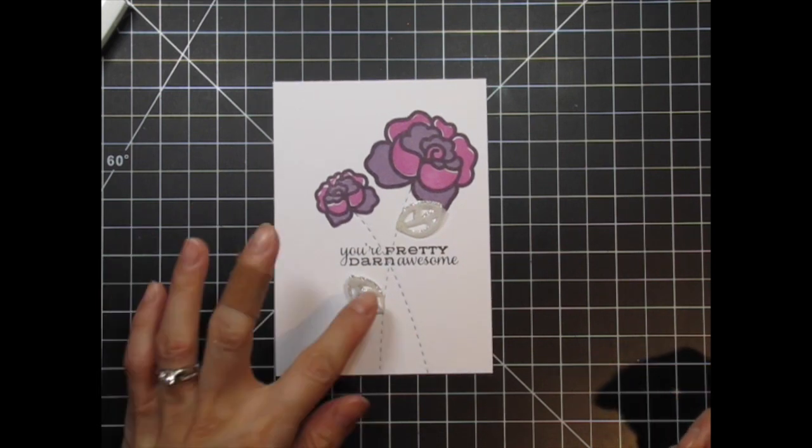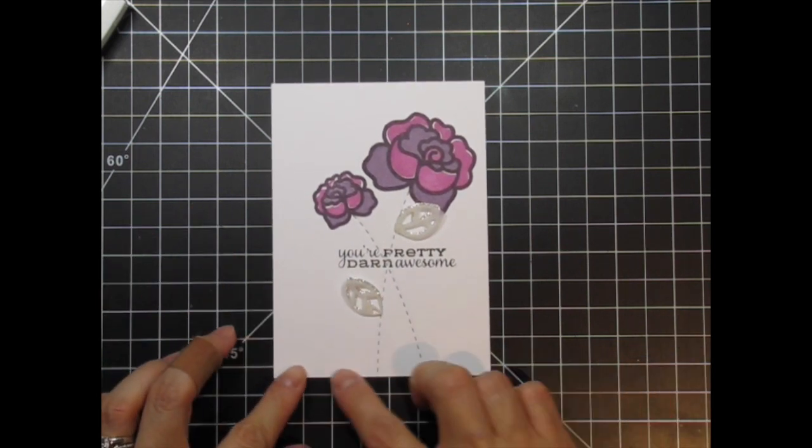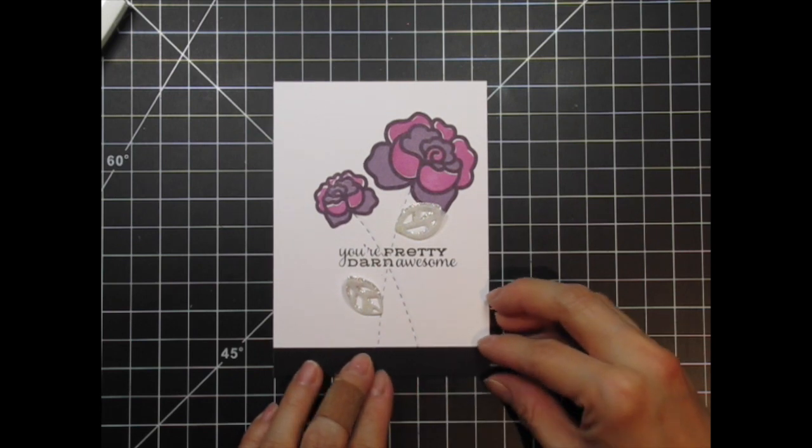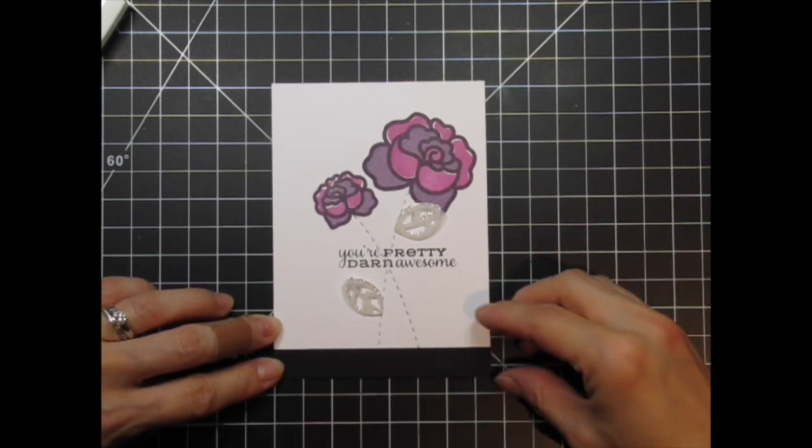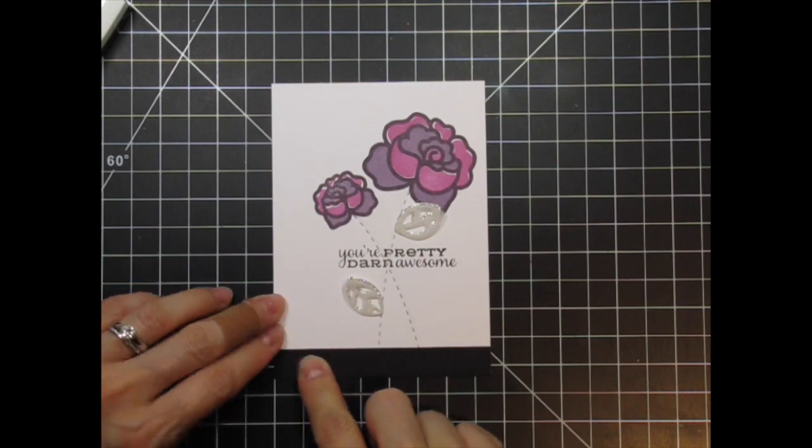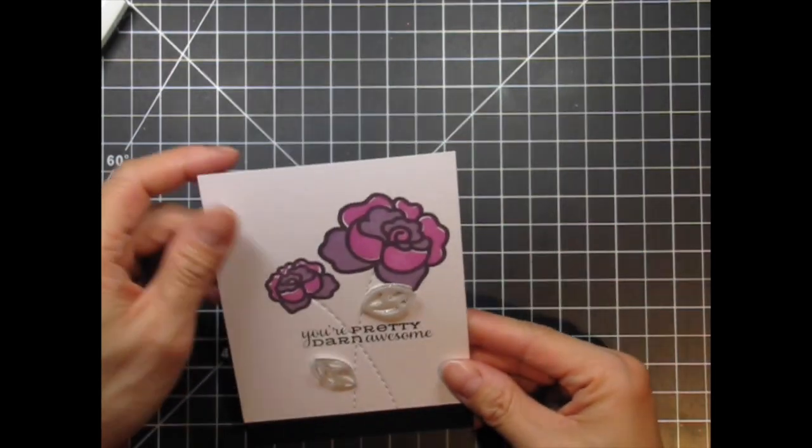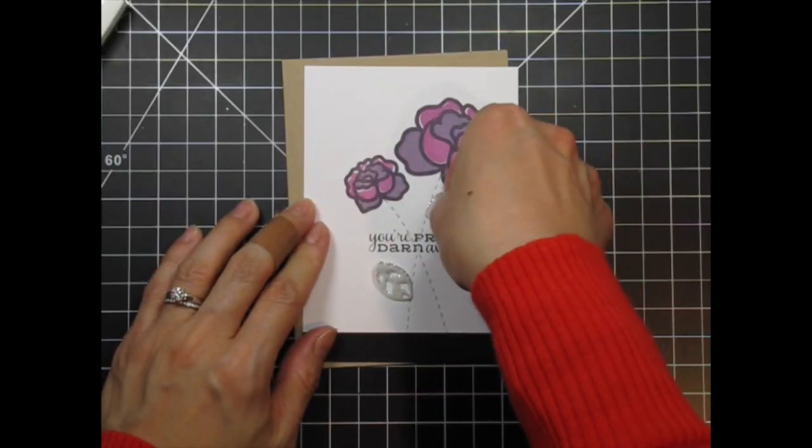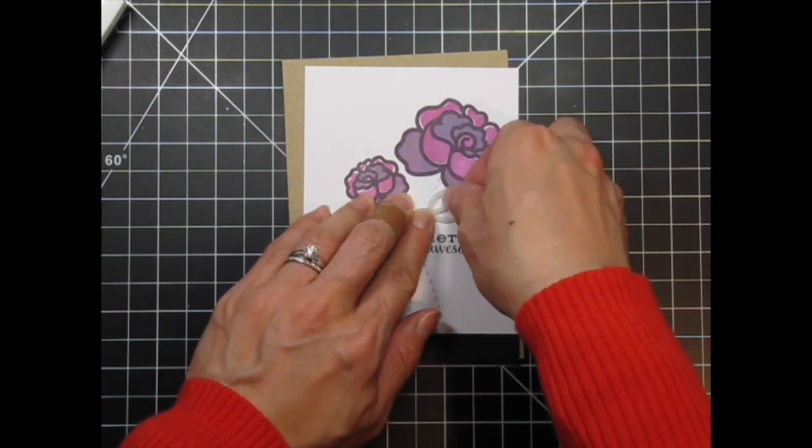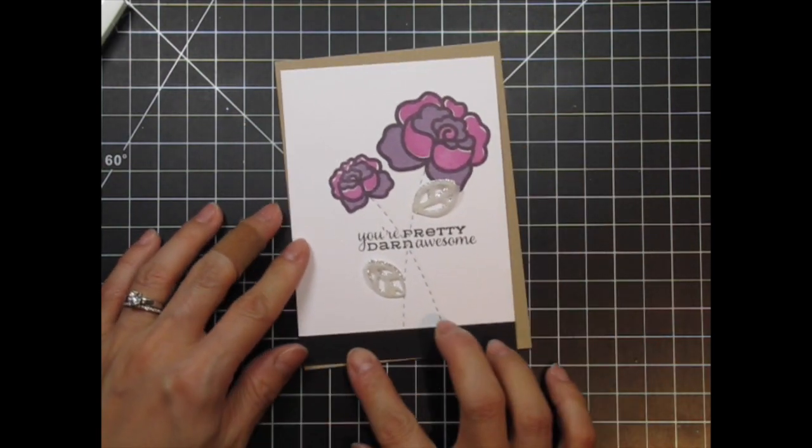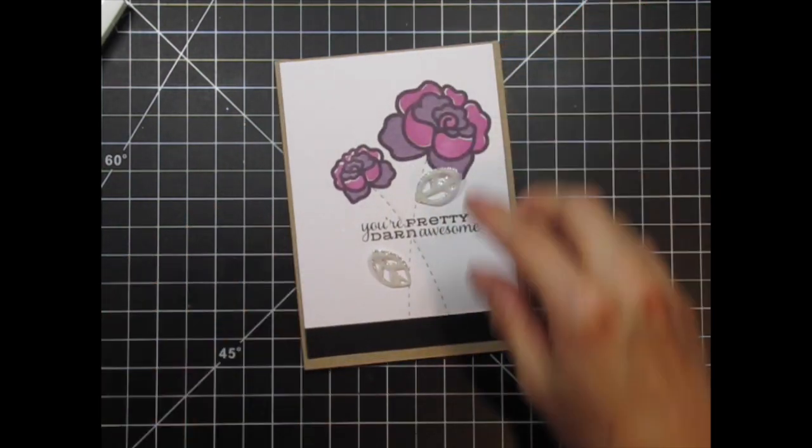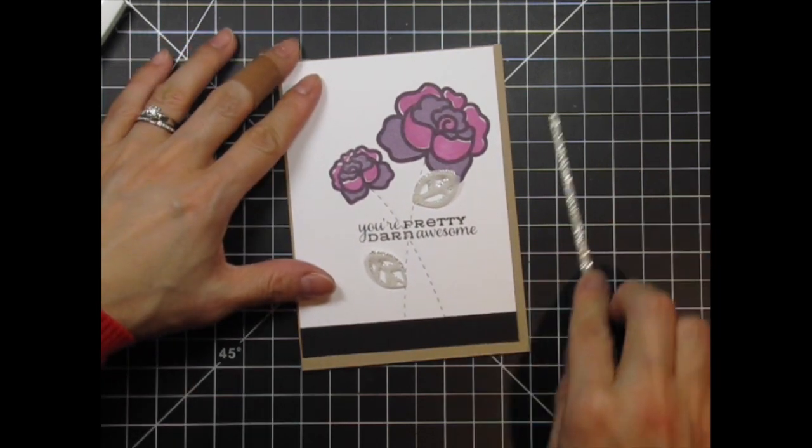After the leaves are adhered, I decide to add a half inch strip of black cardstock to ground the flowers. I make a small adjustment to the angle of the top leaf before adding an eighth inch strip of glimmer cardstock at the top of the panel to balance out the leaves and draw the eyes upward.